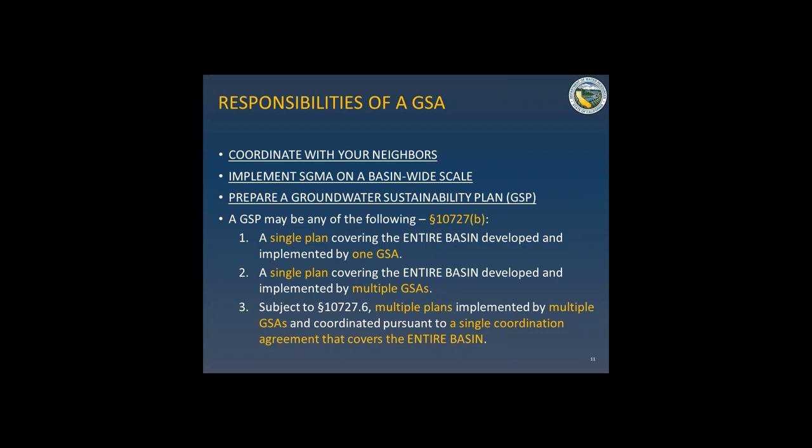A GSP could be any one of three things. A GSP can be one plan implemented by one GSA. A GSP can be one plan developed and implemented by multiple GSAs, in which case those multiple GSAs will have to coordinate their assumptions. But also, subject to Water Code 10727.6, if multiple GSAs want to develop multiple plans, they can do that, but it will have to be coordinated pursuant to a single coordination agreement that covers the entire basin. If you take the multiple GSA and multiple GSP approach, you will be required to coordinate that GSP to make sure it has a common set of assumptions.